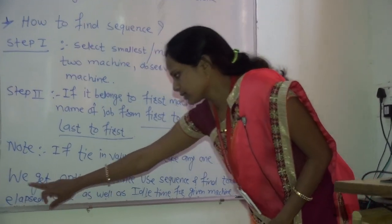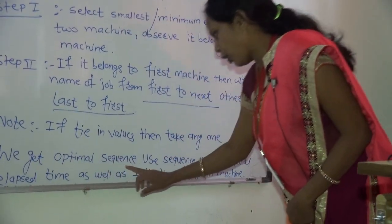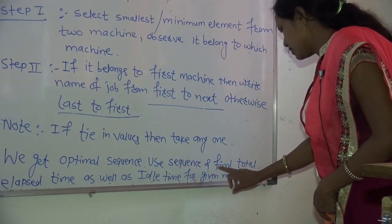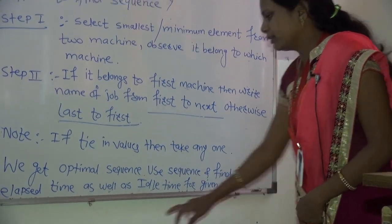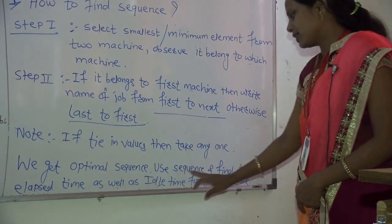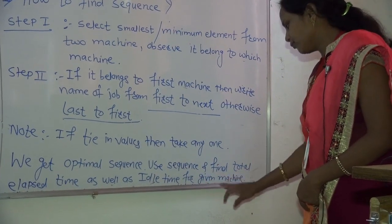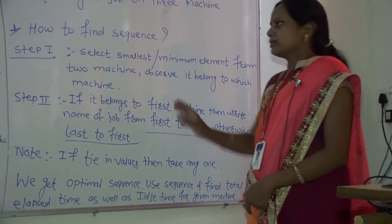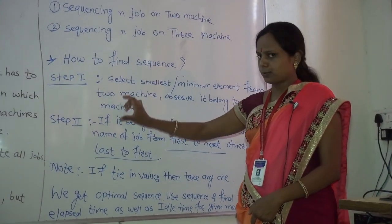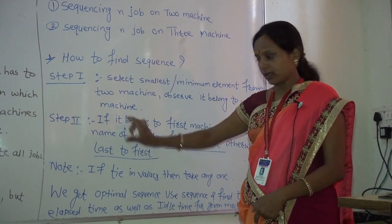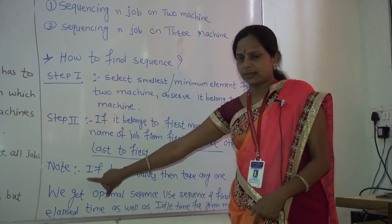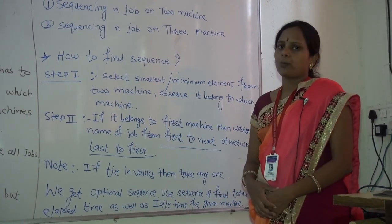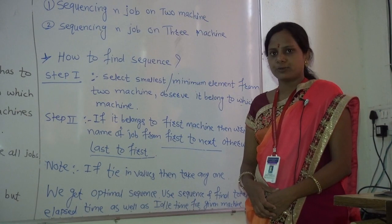So using these steps, we get the optimal sequence. Use this sequence and find the total elapsed time as well as the idle time for the given machines. By applying step one, step two, and the note, you will get the optimal sequence.